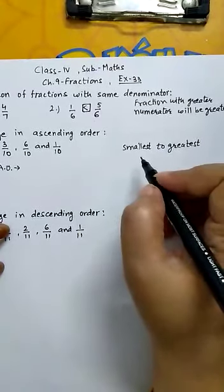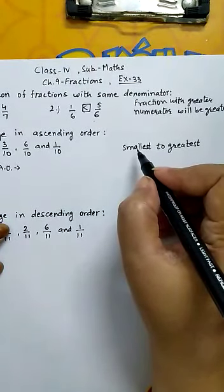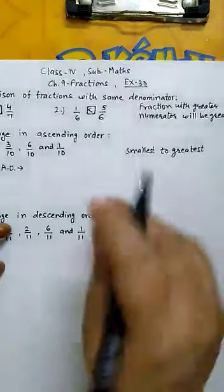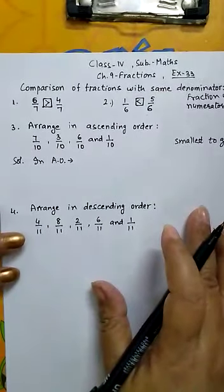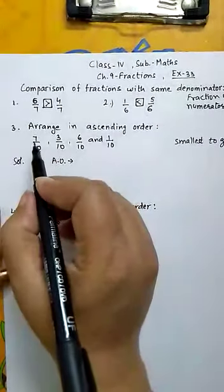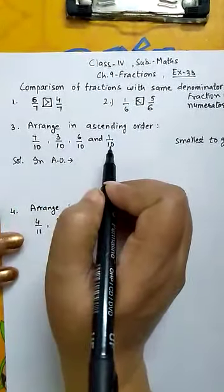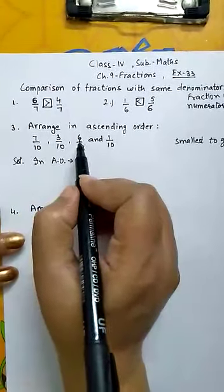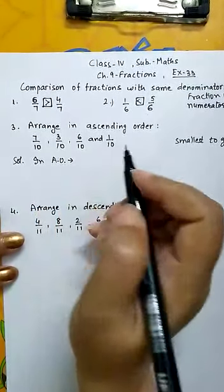First we write the smallest number, and last will be the greatest. Let us find the smallest among these. The denominators are the same, so we compare the numerators: 7, 3, 1, and 6. Which one is the smallest?